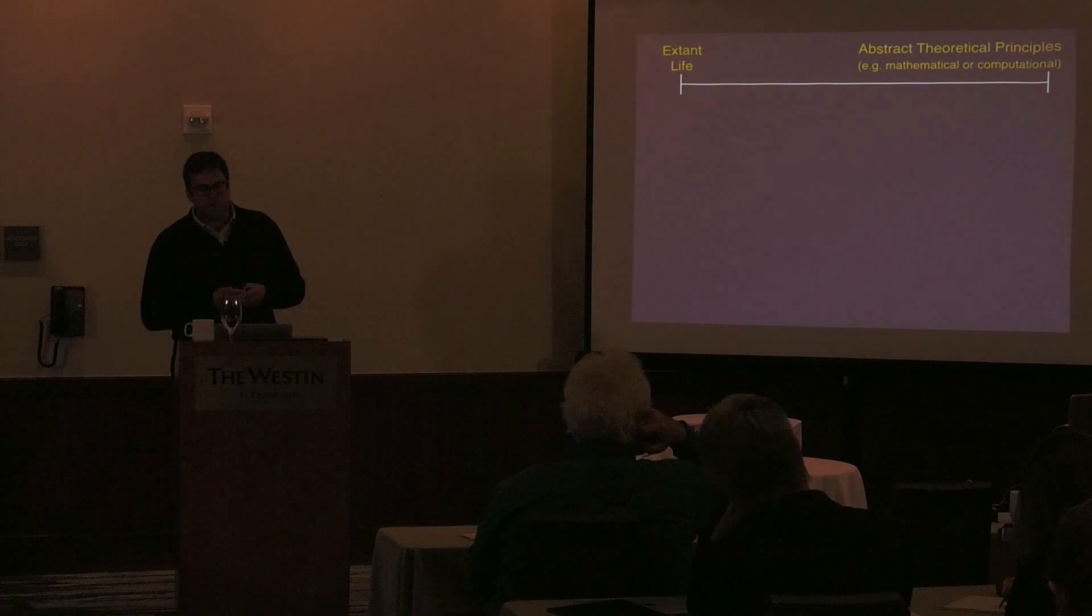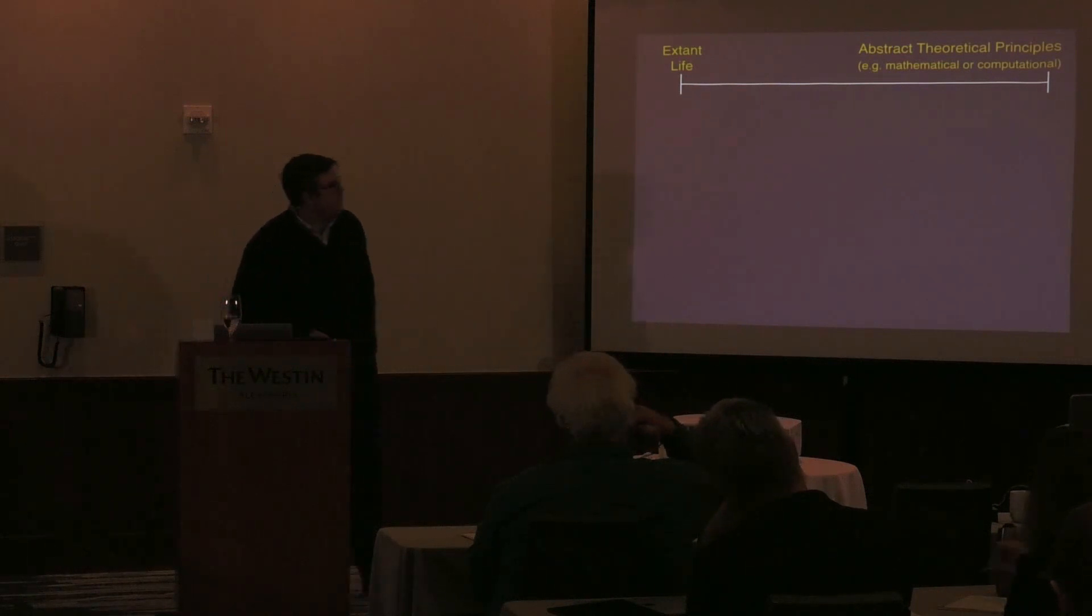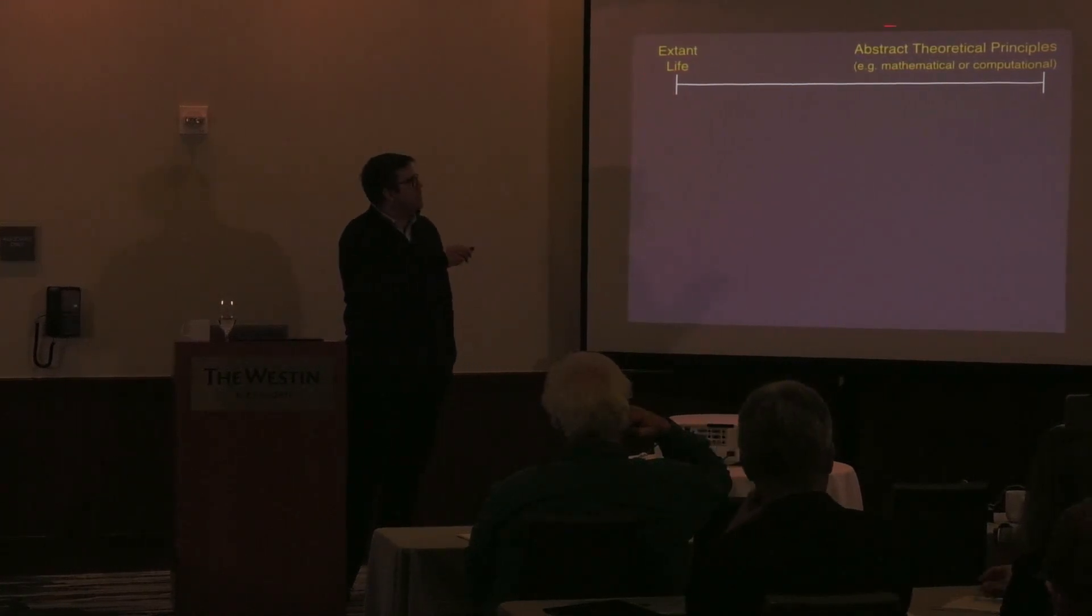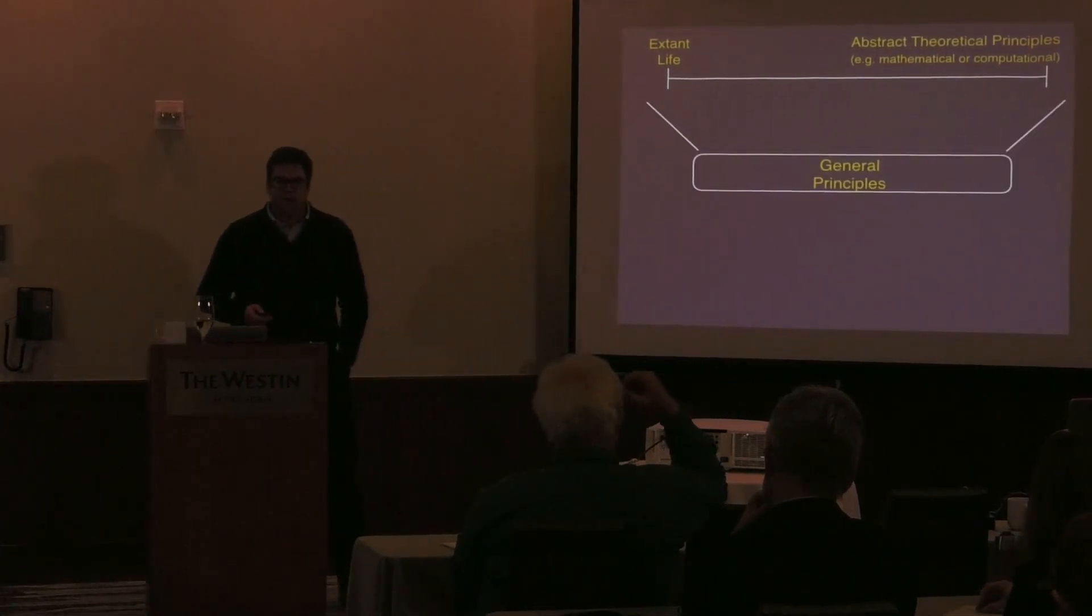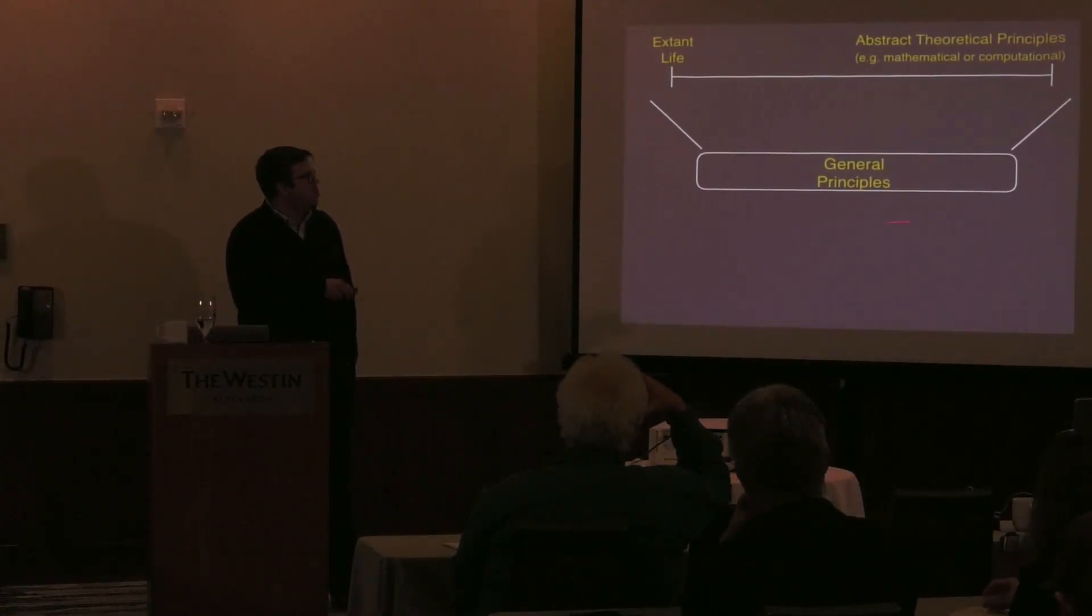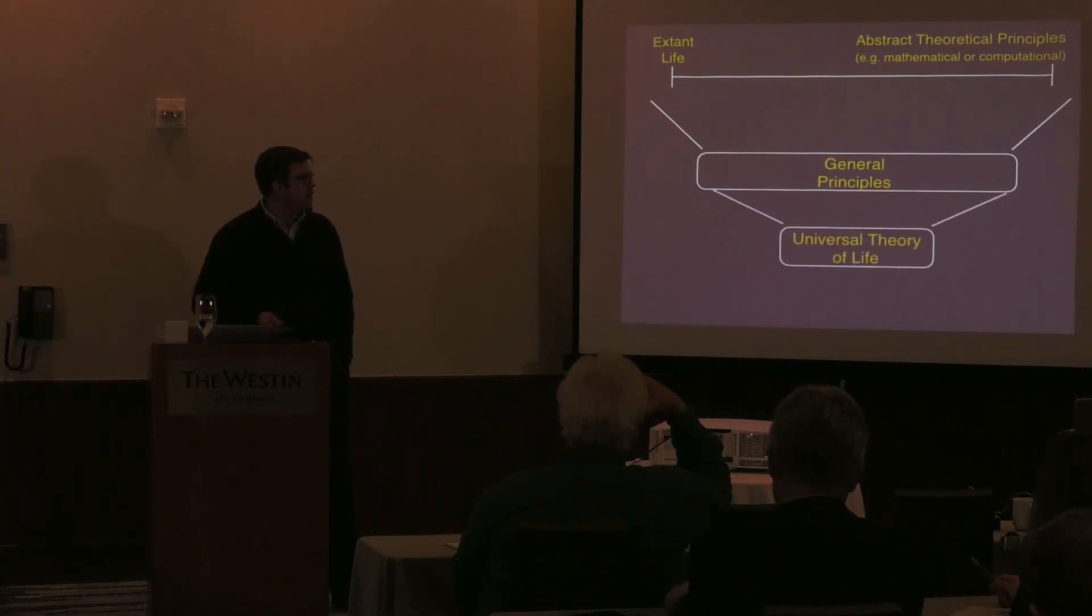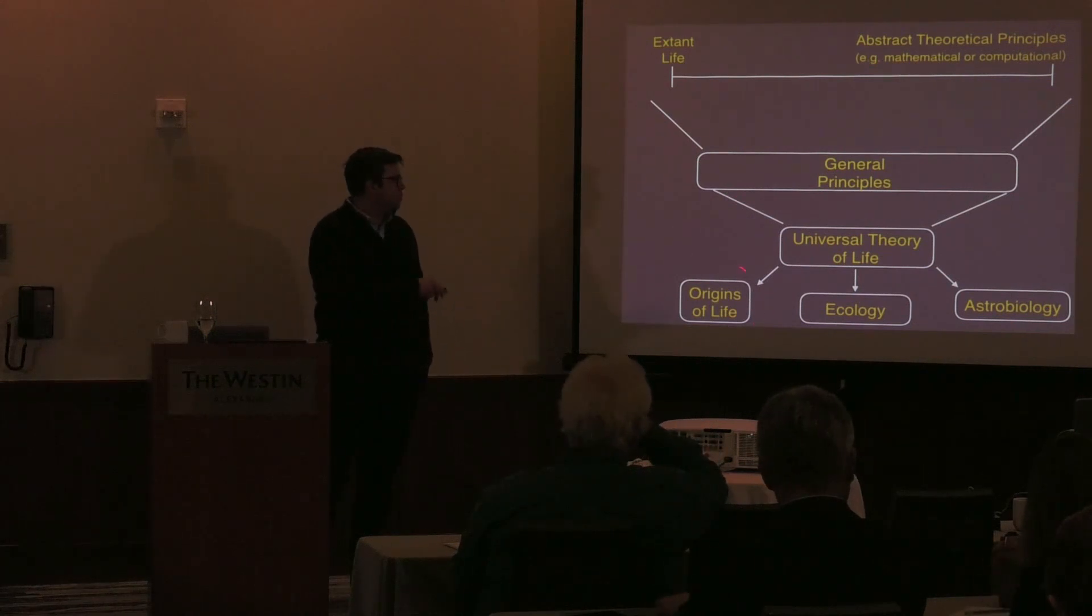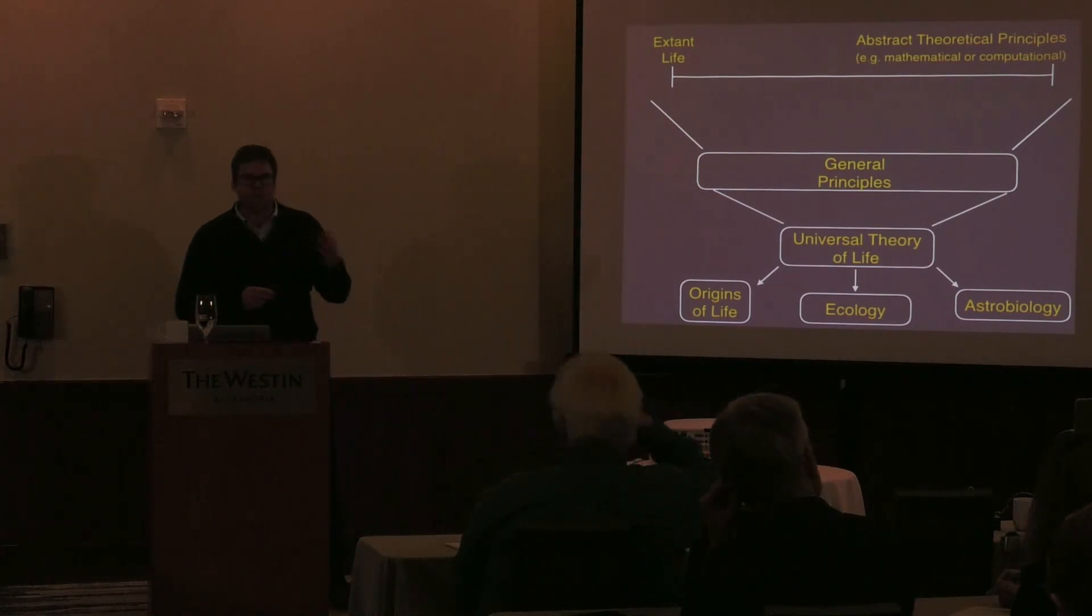The way I think about this is the challenge at hand is to take this spectrum of thinking about things we know about extant life on our planet combined with abstract theoretical principles, boil those down into a more general set of principles about life, out of this build some universal theory of life, and then use this to predict a whole family of potential origins of life, understand ecology and evolution on our own planet, and then think about how to search for life in the universe and how we would recognize life in general.